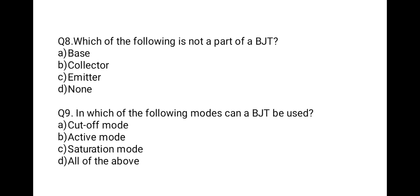The next question is: which of the following is not a part of a BJT? First: base; second: collector; third: emitter; fourth: none. BJT has three regions — emitter, base, and collector — so all three are parts of BJT. Therefore the last option D is correct: none of the listed options is not a part of BJT.